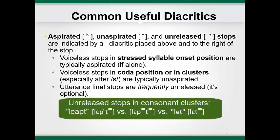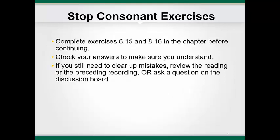Another context where you are likely to observe unreleased stops is as the first consonant in a consonant cluster in the syllable coda. For example, in the word 'lept,' the P is likely to be unreleased because the oral closure is not released until the release of the T—you just change articulatory position before the release. Listen: lept versus lept. You might think the P is not there and be tempted not to transcribe it, but if it were deleted, the word would be 'let.' Listen: lept versus let. Complete the relevant exercises in your textbook to practice these three allophones.